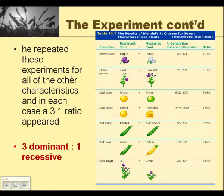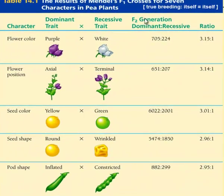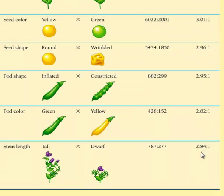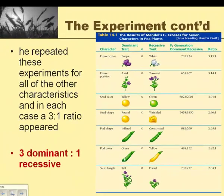When he repeated these experiments for all of the other characteristics, in each case he saw a 3 to 1 ratio. He collected in the F2 generation 705 purple flowers to 224 white flowers, a 3.15 to 1 ratio. For seed color, he looked at yellow seeds and green — he had 6,022 yellow to 2,001 green, a 3.01 to 1 ratio. If you check out the ratios listed, you'll notice that all of them go to 3 dominant to 1 recessive, or a 3 to 1 ratio. You will end up with 3 green pods for every 1 yellow pod in the F2 generation.